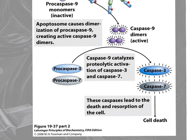Caspase 9, whenever it becomes activated by forming dimers, is what's going to turn pro-caspase 3 and pro-caspase 7 into the mature active form. What does the term proteolytic mean? 'Lytic' in general means cutting - so this means that part of the protein is cut. Caspase itself is some type of protease.